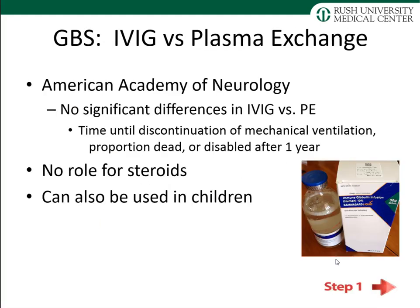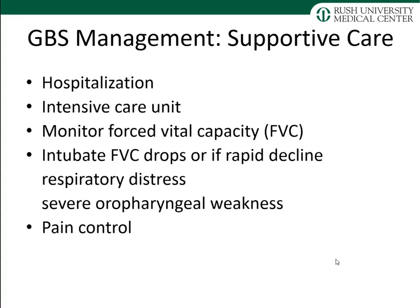We can treat Guillain-Barré syndrome. The American Academy of Neurology guidelines indicate no significant difference between IVIG and plasma exchange regarding outcomes such as time to discontinuation of mechanical ventilation or proportion dead or disabled at one year. There is no role for steroids. For management, patients must be hospitalized — many in the ICU. Lung function must be monitored with forced vital capacity; intubate immediately if FVC drops or there is rapid respiratory decline. Severe oropharyngeal weakness also triggers intubation. Pain control is very important.